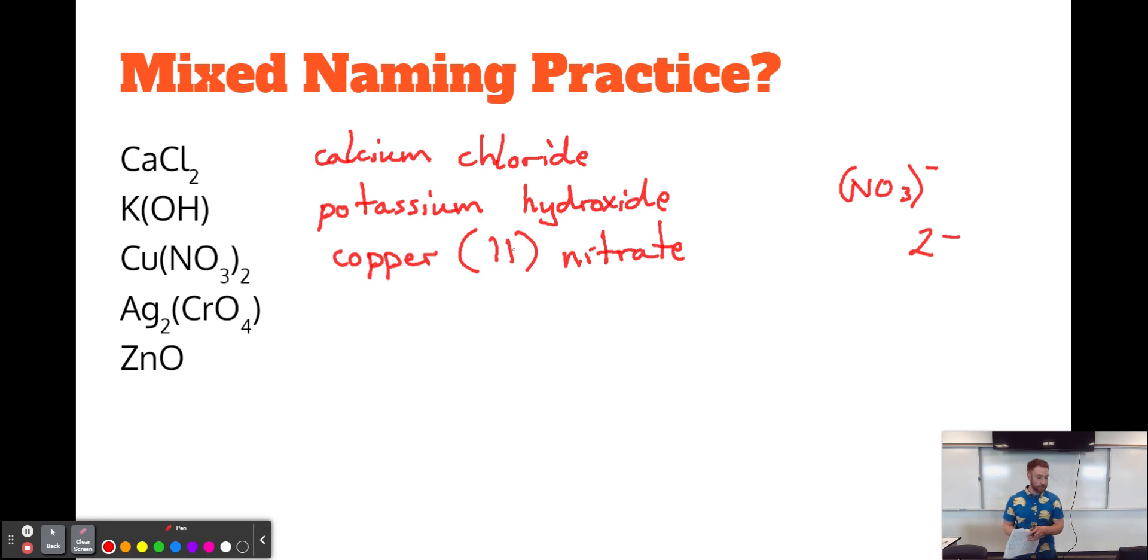Now, the next one is also interesting because Ag is silver. And that is also a transition metal. So we're dealing with silver. We're going to need a Roman numeral. And then CrO4, it's in parentheses. It must be a polyatomic ion. CrO4 is chromate.